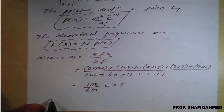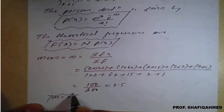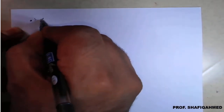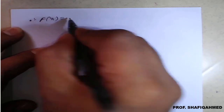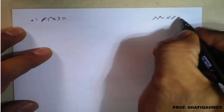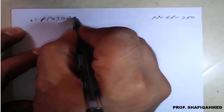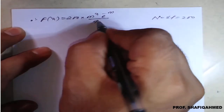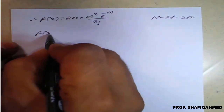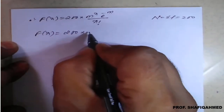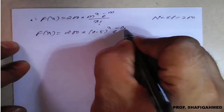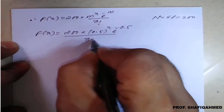So, I can say that the value of M is 0.5. Therefore, F of X is equal to 200 into 0.5 raised to X, into E raised to minus 0.5, whole divided by X factorial.